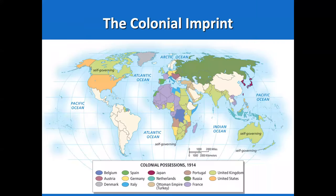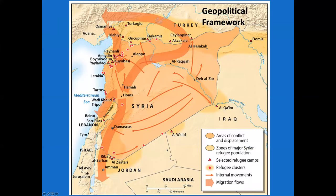Look at the idea of the colonial imprint. When you look at the continent of Africa, you can see the influence of so many places, and you still see that lingering to this day. We'll also address the recent conflict — though somewhat abated — of ISIS and the civil war that took place in Syria starting back in 2011, which led to so many refugee movements out of Syria into Turkey.